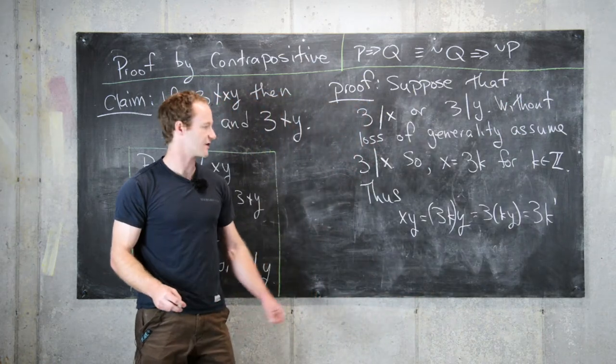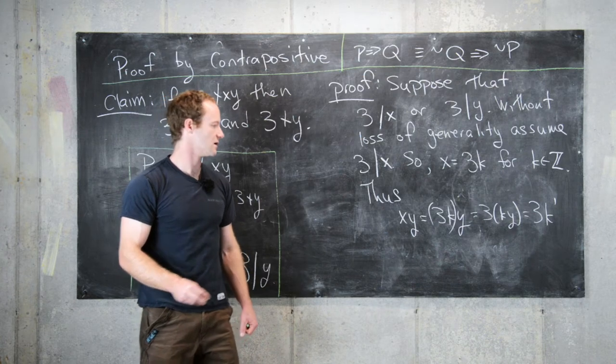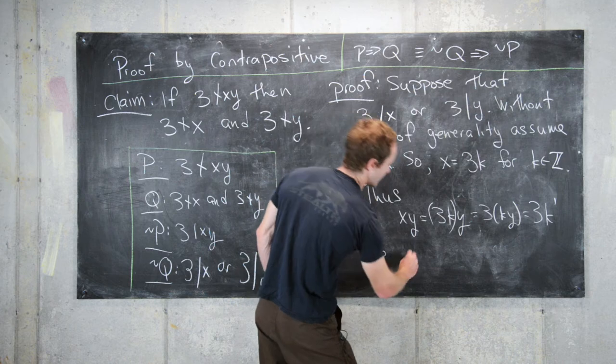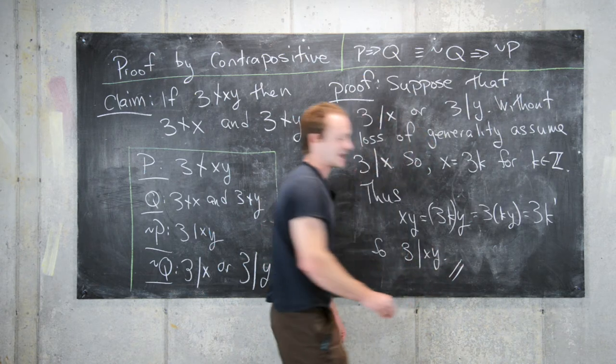This equals 3 times K prime, where I've absorbed the K and the Y together. So we have X times Y is a multiple of 3, which means 3 divides XY, as needed.